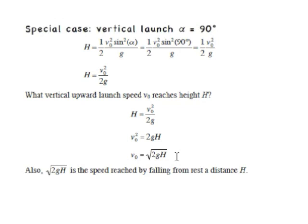By the same token, square root of 2GH is the speed reached by an object that's dropped straight down from rest, a distance H.